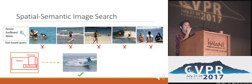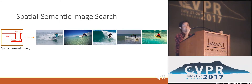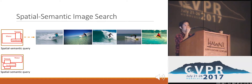So in this work, we focus on spatial semantic image search in which users can interact with the 2D canvas to create, annotate, and manipulate bounding boxes to specify their search intent in a spatial semantic query. Then our system will automatically retrieve the relevant images that respect the user query both semantically and spatially.